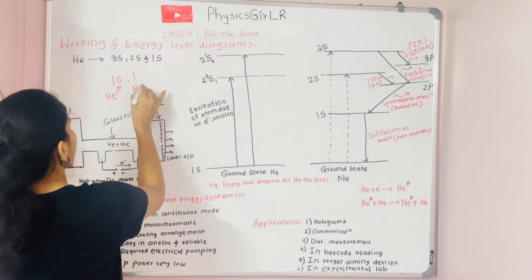To summarize the working principle: the DC supply produces high-energy electrons causing tube discharge; helium atoms get excited and transfer energy to neon atoms via collision; neon atoms get excited to higher energy levels; population inversion is achieved; neon atoms de-excite with spontaneous emission producing one photon; that photon stimulates other excited neon atoms, producing continuous lasing action at 6328 Å; then transitions occur from 2P to 1S and 1S to ground state, completing the cycle.